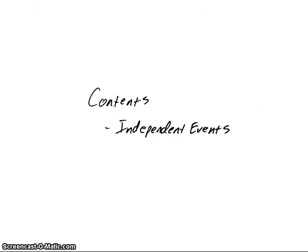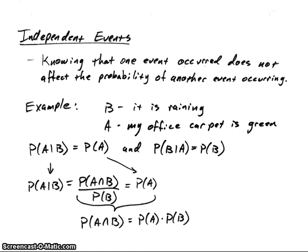In this video, we're going to look at independent events. Let's think about what we mean by two things being independent of each other. Here's a quick definition: knowing that one event occurred does not affect the probability of another event occurring.